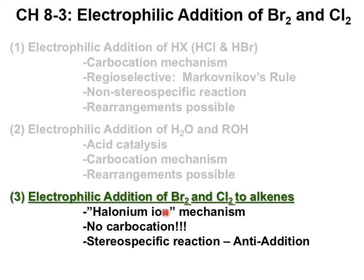As we saw in recordings 8-1 and 8-2, we're going to get a unique intermediate called a halonium ion. If it's bromine, it's a bromonium ion; if it's chlorine, it's a chloronium ion. Since there's no carbocation, this is actually a stereospecific reaction and there are no rearrangements. What we're going to see is that we're going to get anti-addition of the electrophile and the nucleophile — they add 180 degrees opposite of each other.